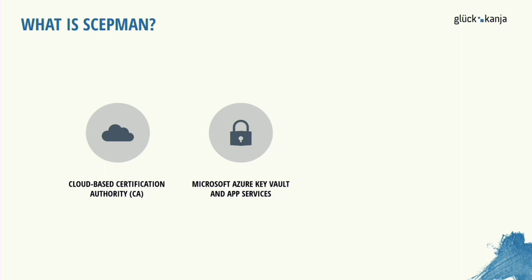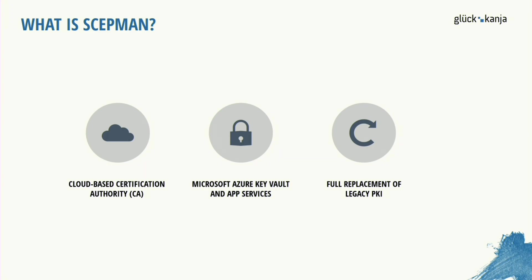The main idea is to fully replace legacy PKI for our customers. We can implement on-premises PKIs and use self-generated root certificates, but the main idea is that SCEPman generates its own root certificate, and with this we can create client certificates for our 100% cloud enrollments.